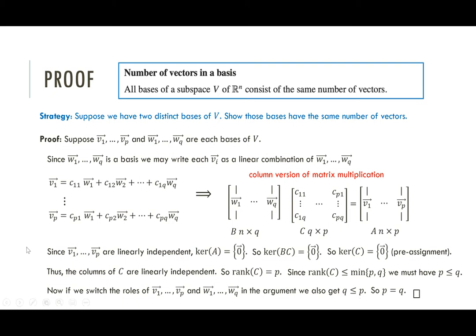Maybe you agree with the author — technical and unenlightening. But notice the concepts it brings together: basis, linear combinations, the column version of matrix multiplication, dimension of matrices, linear independence and its relationship to the kernel, subsets of kernels, relationship between kernel and matrix multiplication, rank, and the relationship between rank and rows and columns.